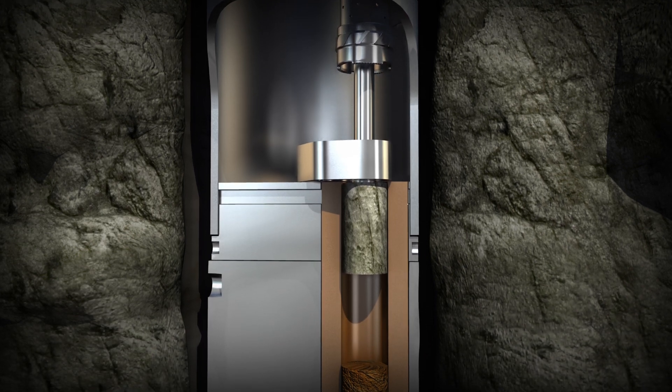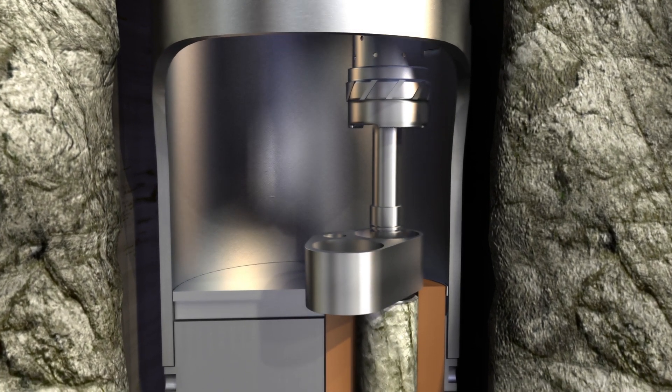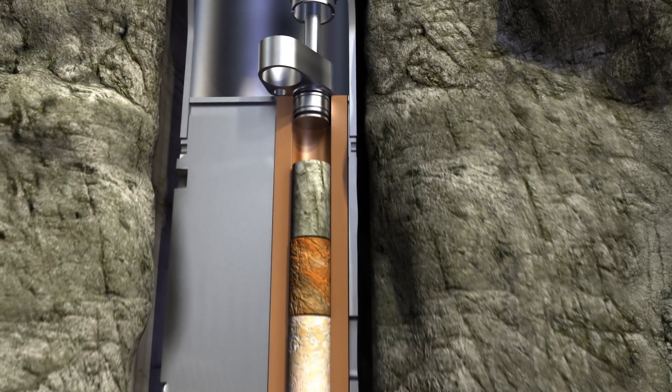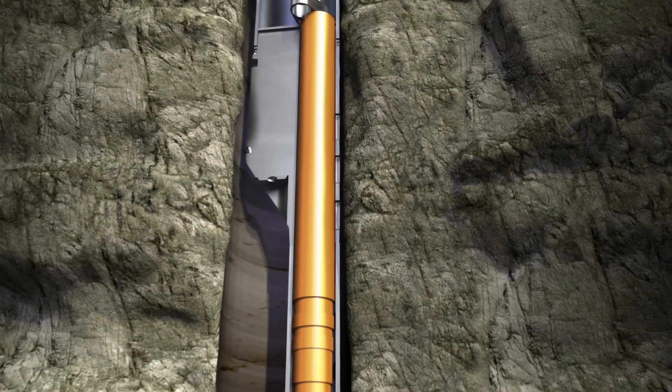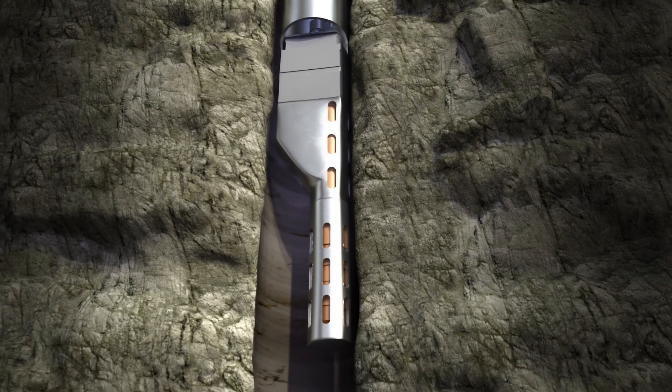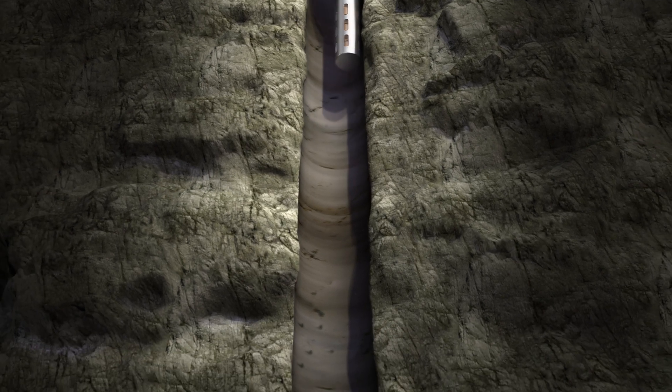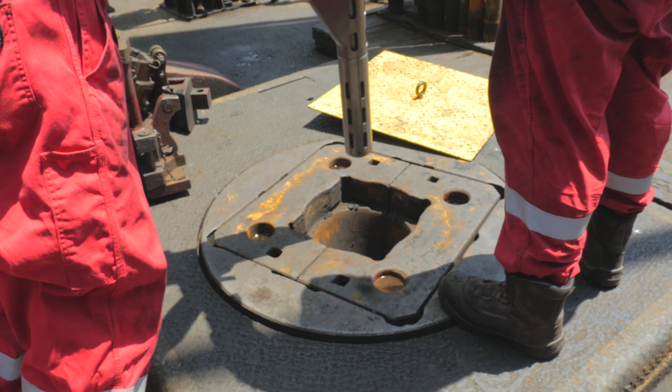Cores are sealed in a pressure-tight container before bringing them to surface. This means there is zero fluid loss, which in turn allows accurate measurement of the fluids within. And you want the most accurate information available when deciding which zones to complete and which ones to avoid.